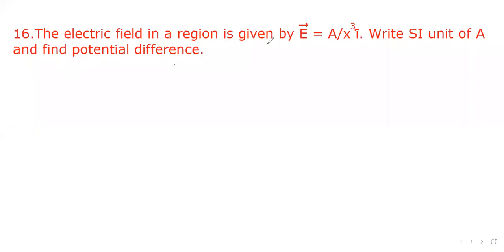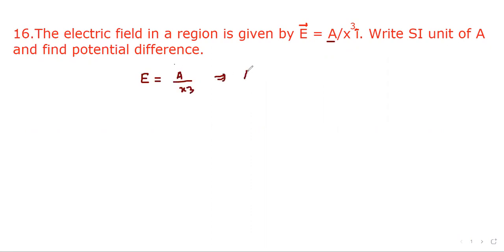The electric field in a region is given by E equal to a upon x cube, y-hat. Write the SI unit of a and find the potential difference. To find the SI unit, let's take scalar quantities, so E will be equal to a upon x cube, and our purpose is to find a, so a will be E times x cube.